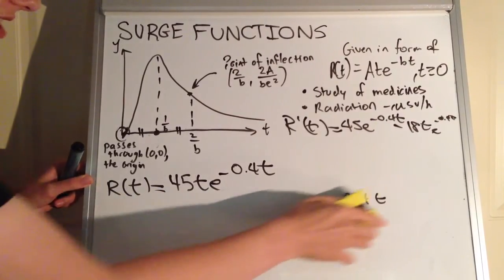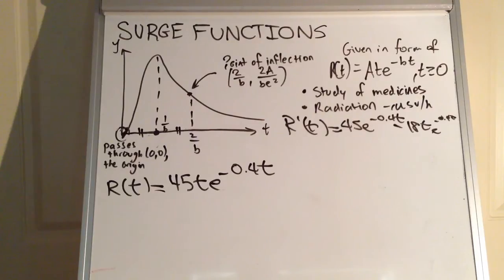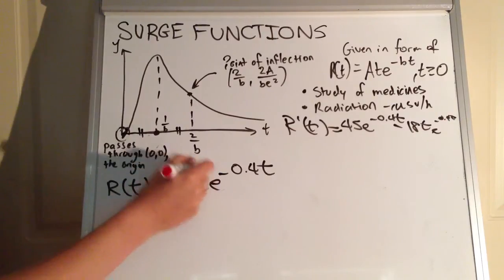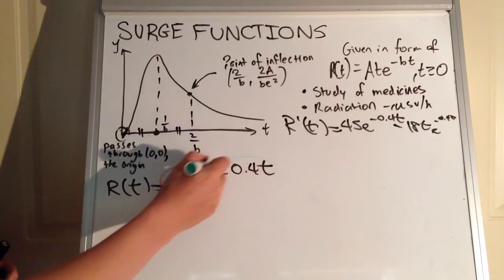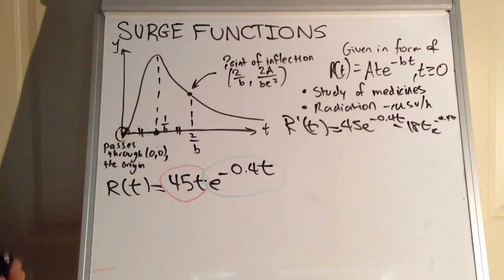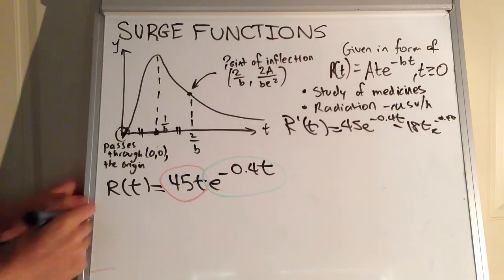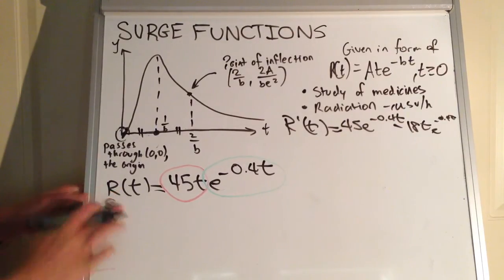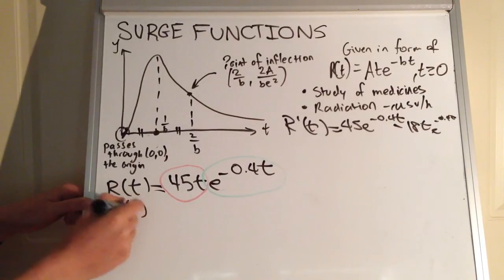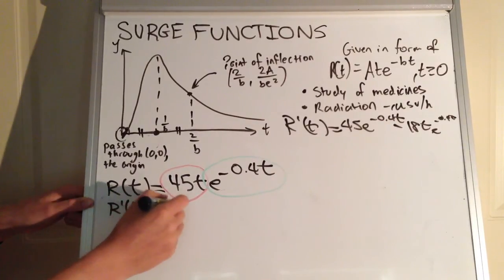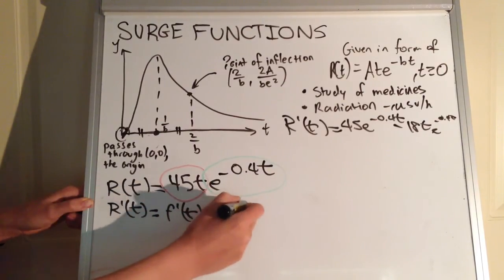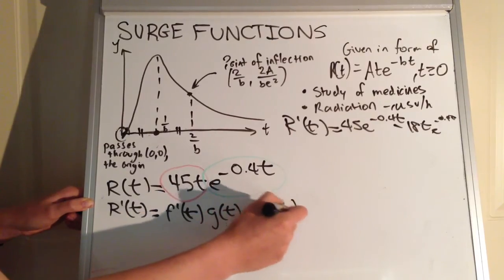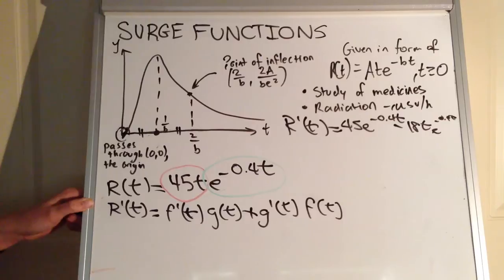We need to identify which rule to use. The product rule is the most straightforward here. We have 45t as our f(t) and e to the power of negative 0.4t as our g(t). We know based on the product rule that R'(t) equals f'(t)·g(t) plus g'(t)·f(t).